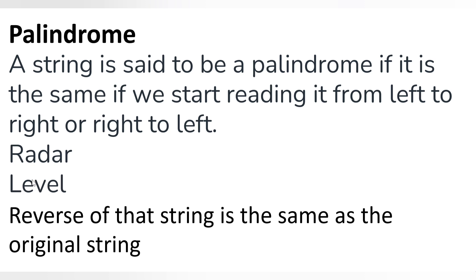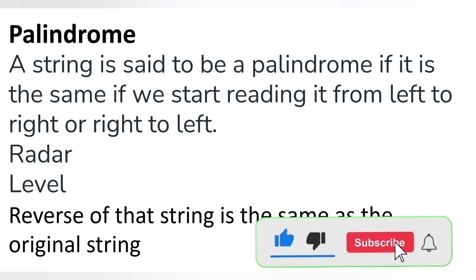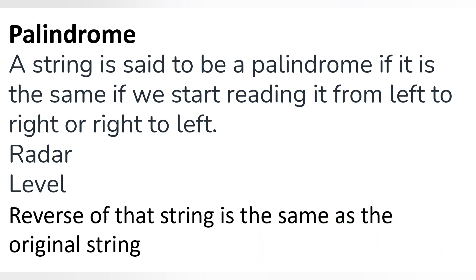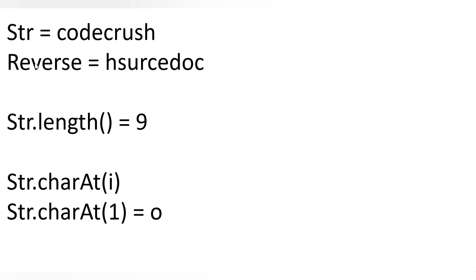In other words, the reverse of a palindrome string is the same as the original string. So the logic to check if a string is palindrome: we find the reverse of that string, and if the reverse is the same as the original string we can say it is a palindrome. For example, the reverse of 'codecrush' will be H-S-U-R-C-E-D-O-C, meaning the last character of the original becomes the first character of the reverse string.